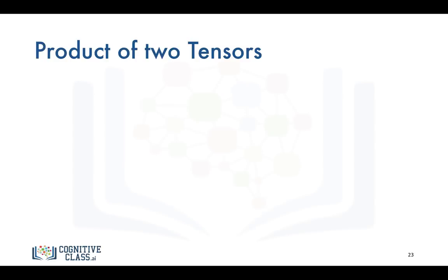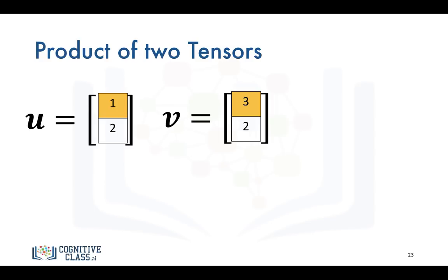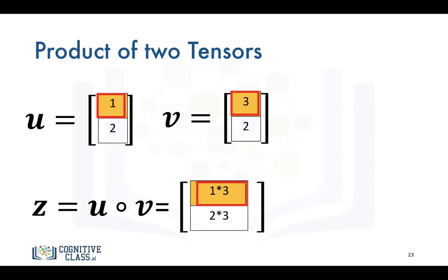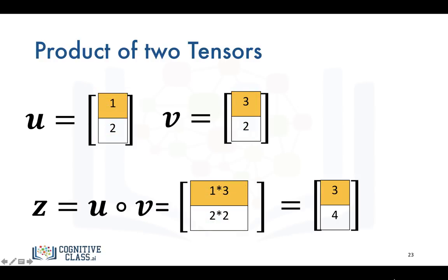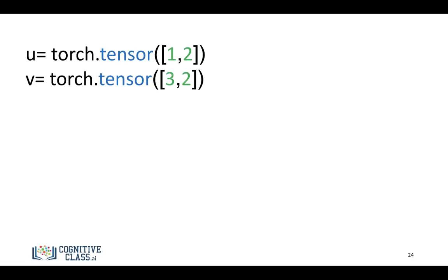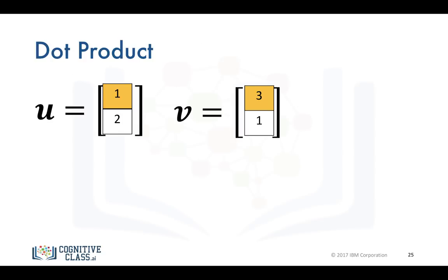The product of two tensors is pretty different. We have tensor U and V, and tensor Z is simply the product of U and V — it's the Hadamard product. The first element of Z corresponds to the first element of U multiplied by the first element of V, and the same for the second element. In PyTorch, we define tensor U and tensor V, simply multiply them, and get the result.